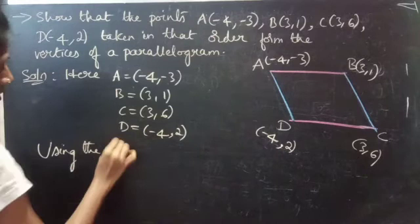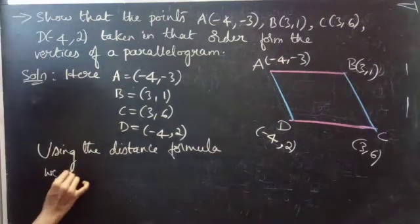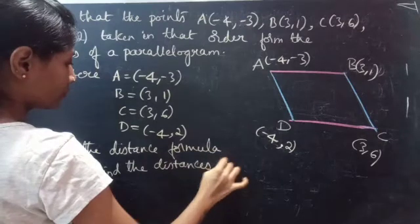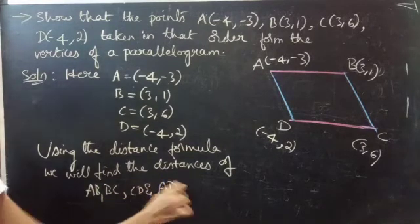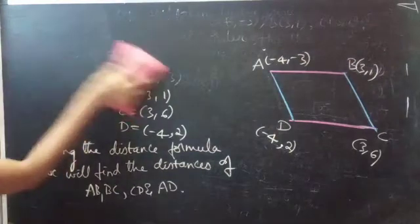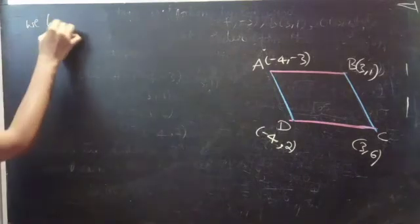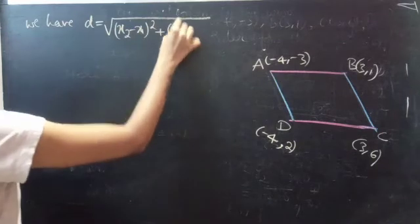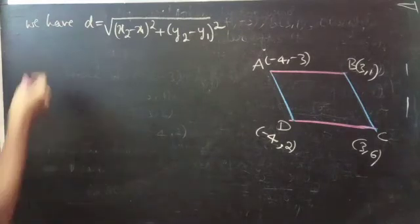Using the distance formula, we will find the distance of AB, BC, CD, and AD. The distance formula is: D equals square root of (X2 minus X1) whole square plus (Y2 minus Y1) whole square. So now we are going to find the distance AB.